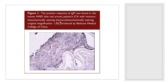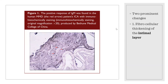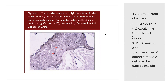This image shows a patient's ICA with immunohistochemical staining, and you can see infiltration and response of IgMs. In the pathology, we mainly see two prominent changes: fibrocellular thickening of the intima layer, and destruction and proliferation of smooth muscle in the tunica media, which mainly produces occlusion of the vessels.